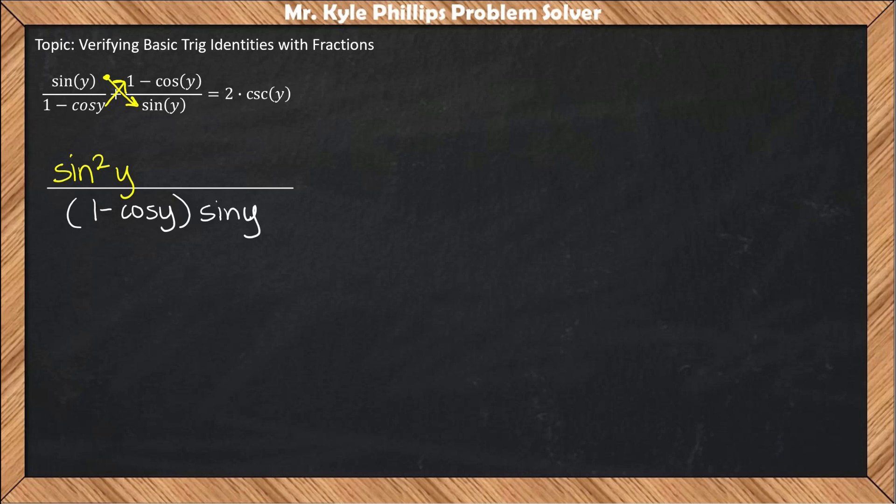Now I have to multiply this denominator times this numerator. Here you're working with two different binomials, so I'm going to work this out on the side. We have 1 minus cosine y times 1 minus cosine y. Remember when multiplying binomials you have to distribute.